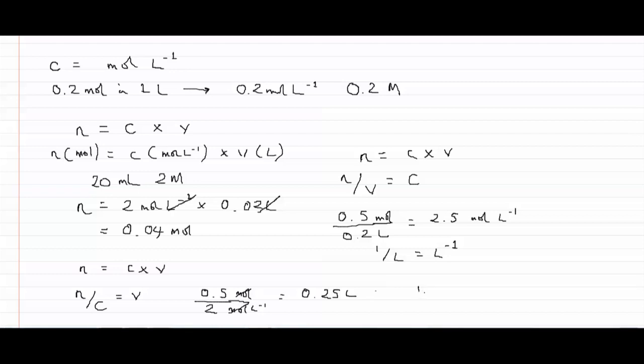In this case the moles cancel and you've got the equivalent of writing one over per liter, which equals liters. That's where the unit of liters comes from. If you have 0.5 moles and you wanted a two molar solution, you'd need to dissolve that in 0.25 liters.